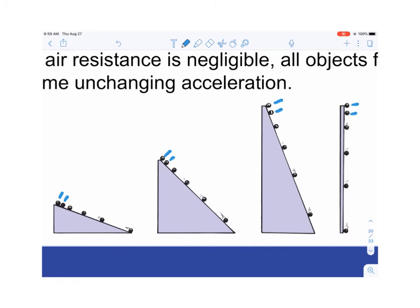When the incline is straight up and down, the ball separates fastest — it's accelerating fastest. So the maximum acceleration due to gravity alone is freefall: falling directly downward.